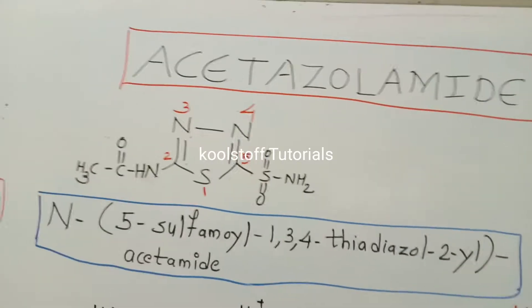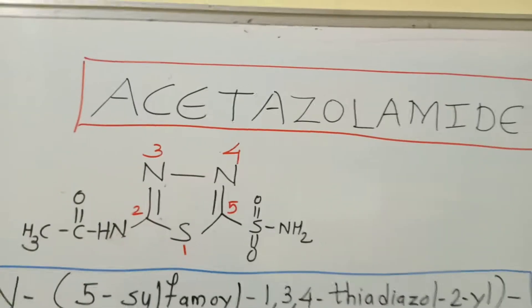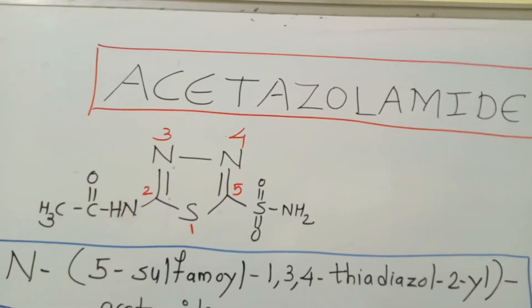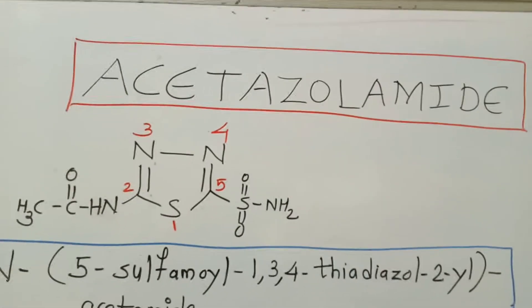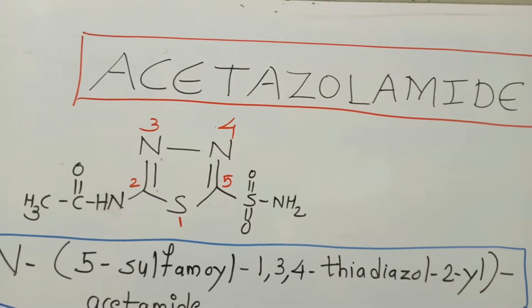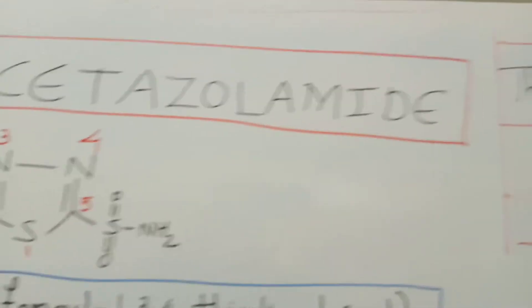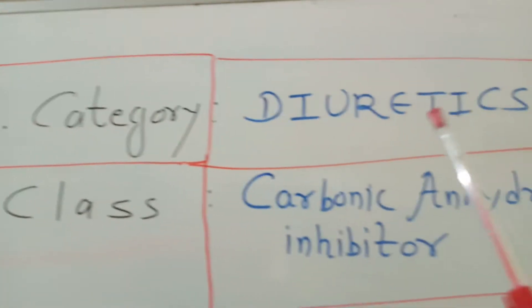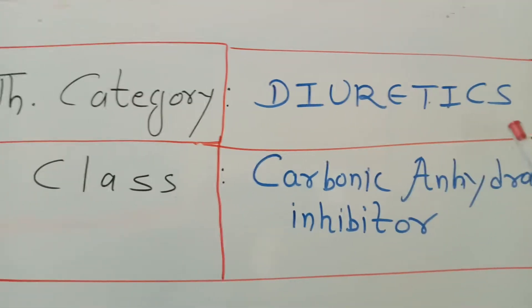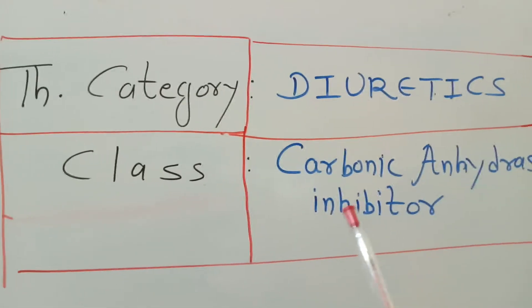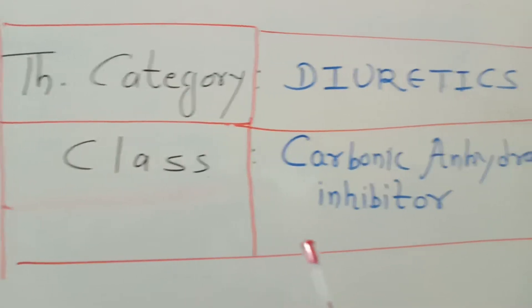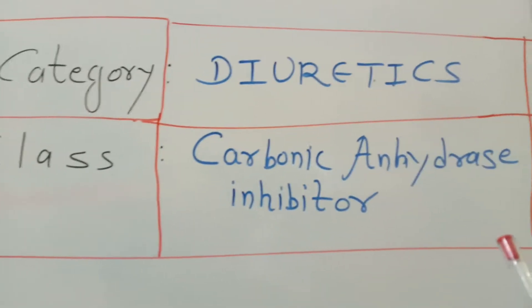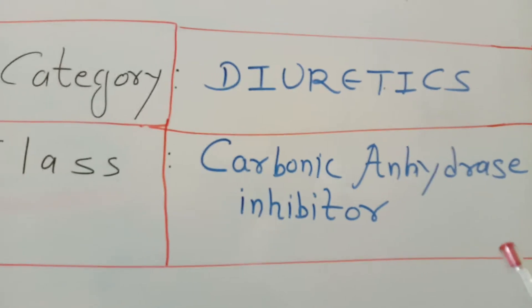Hello friends, today's video is about acetazolamide and its synthesis. This drug belongs to the therapeutic category of diuretic agents and the class of carbonic anhydrase inhibitors.